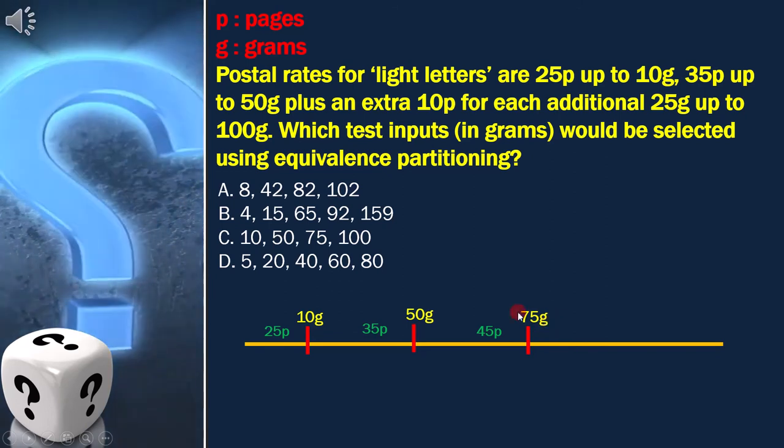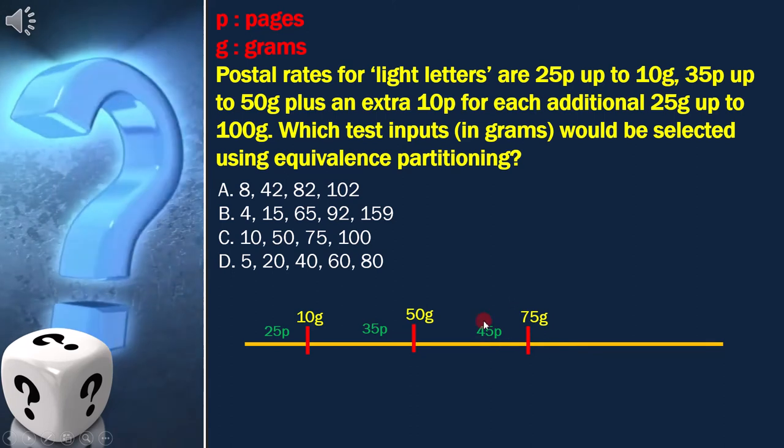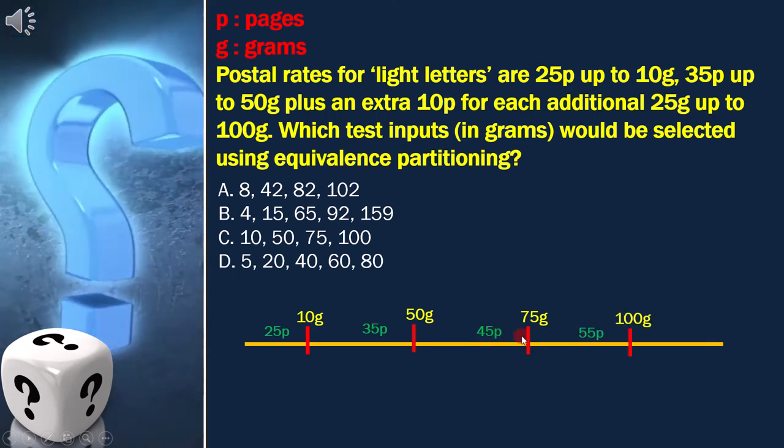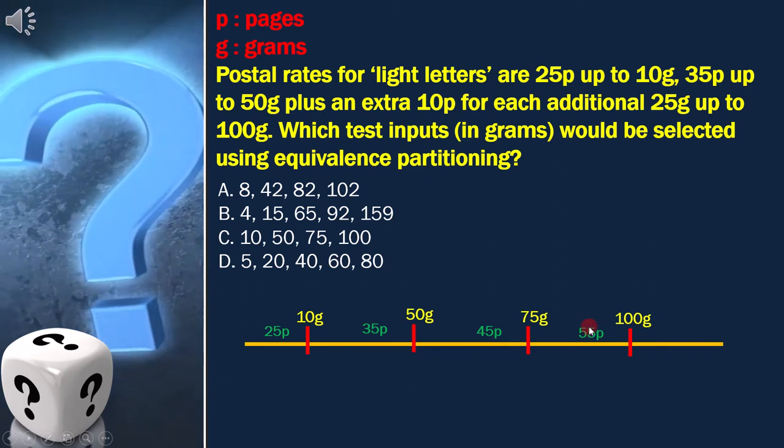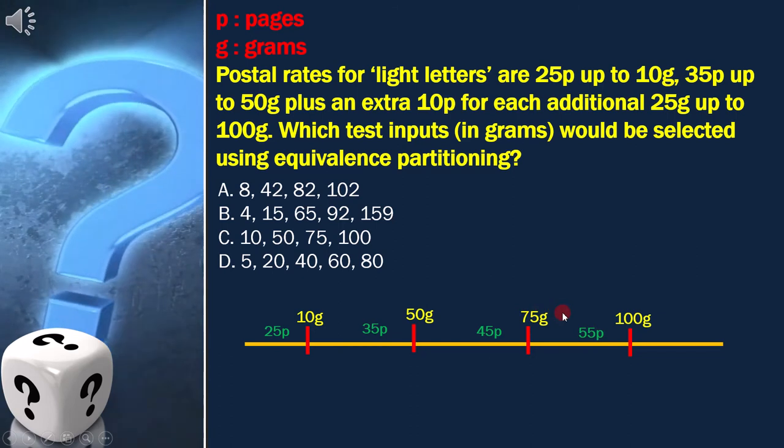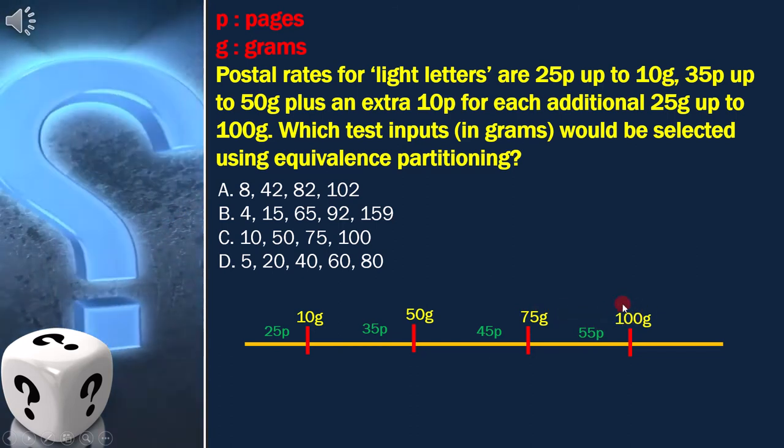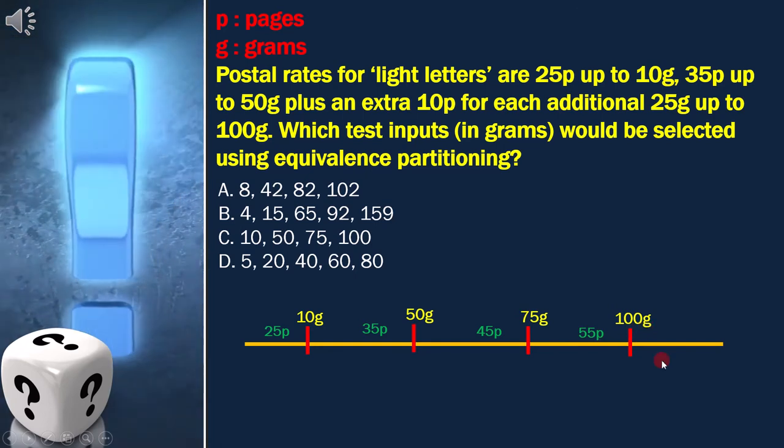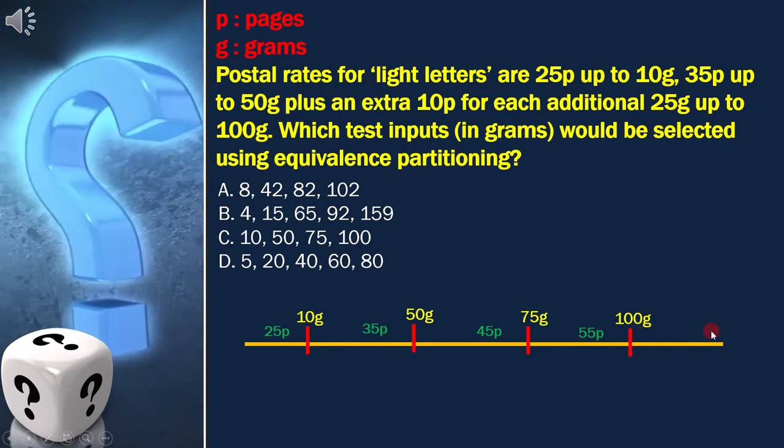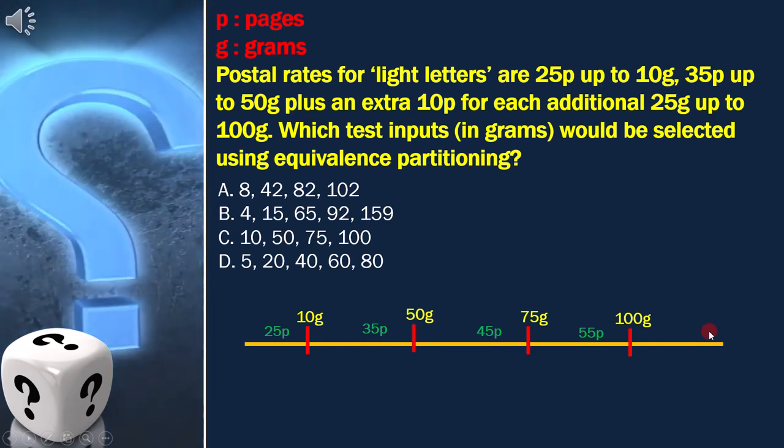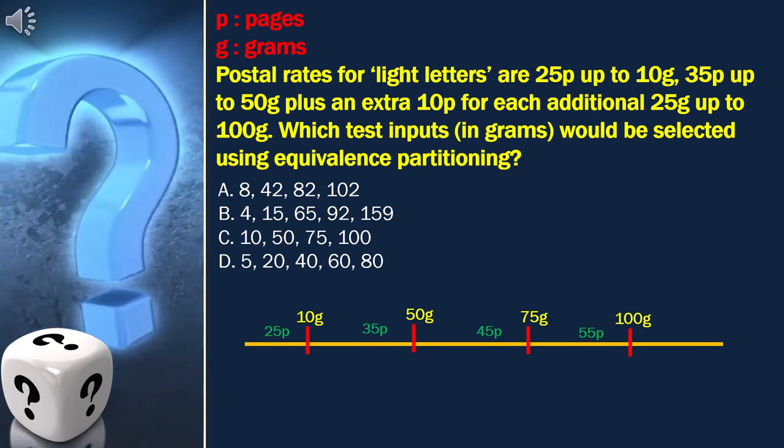So we have to repeat the process again. In 45 pence, we have to add 10 pence. With this, we will get 55 pence. And in 75g, we have to add 25g. With this, we will get the next boundary, which is 100g. With this, the last condition is fulfilled as we reached 100g. Now the equivalence partitioning diagram is complete.